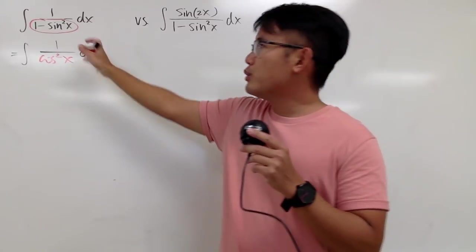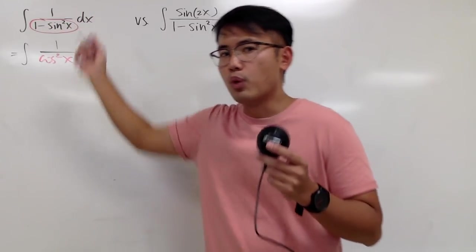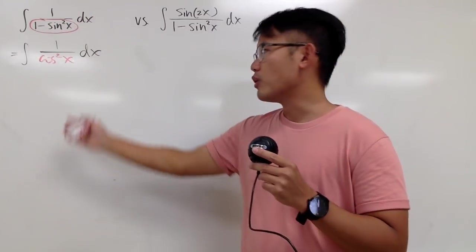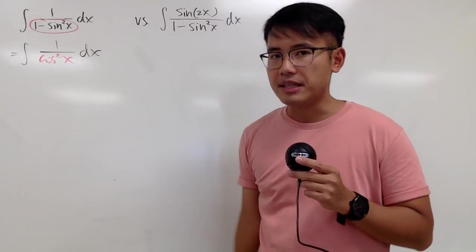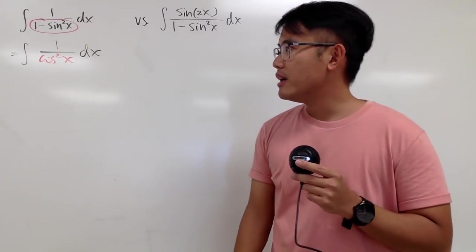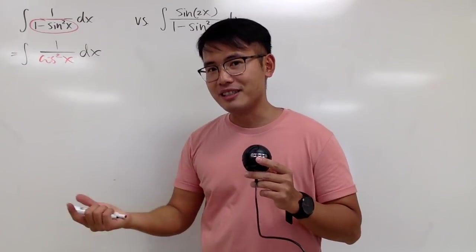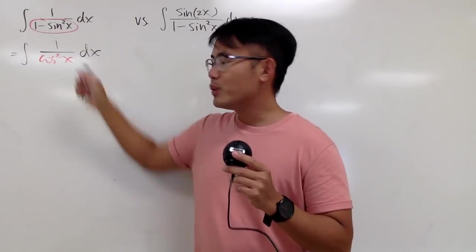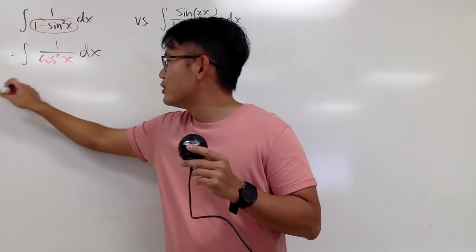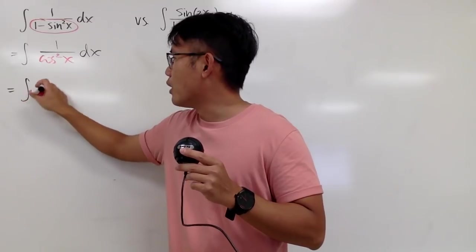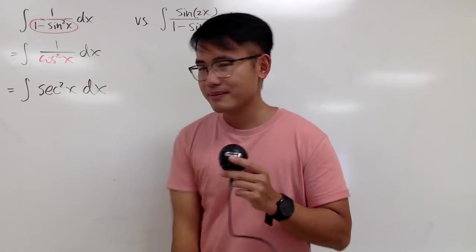I didn't use any u-substitution because there was nothing on the top that I can work with. So let me just write that as cosine squared x on the denominator. And better yet, 1 over cosine — we know that's secant. Here we have 1 over cosine squared, so this is just the integral of secant squared x, dx.